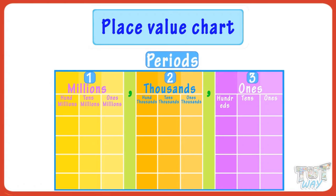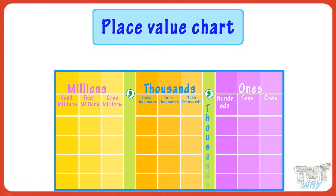Each period is separated by a comma. Each comma has its own name: thousands, millions. If you can read a three-digit number and you know the comma names, you can read any number. Now let's start with a three-digit number.